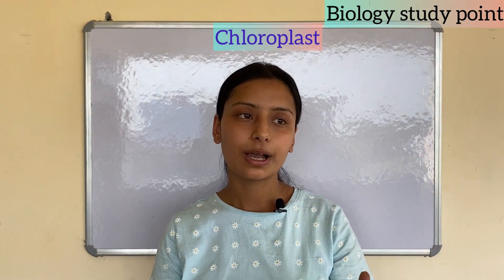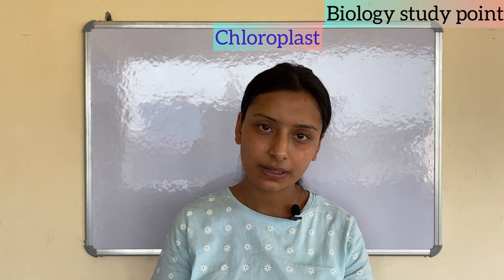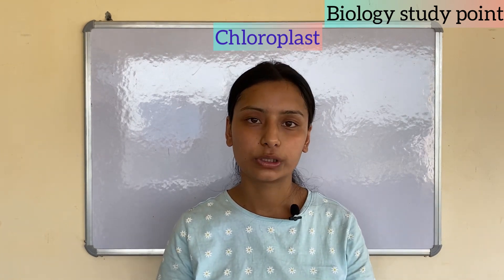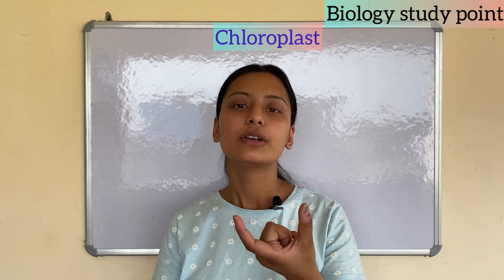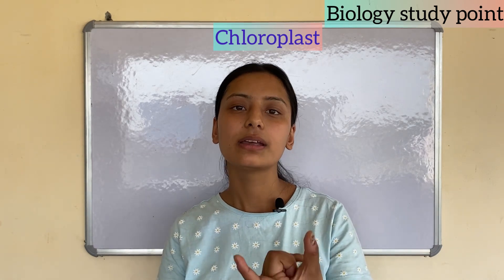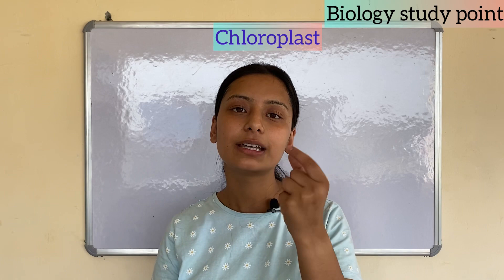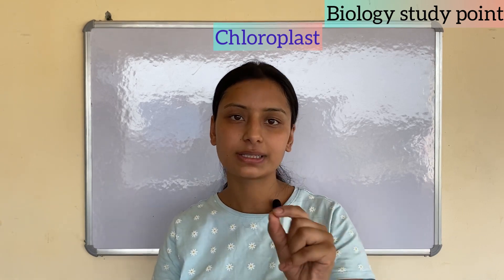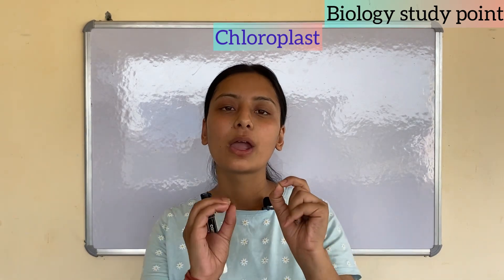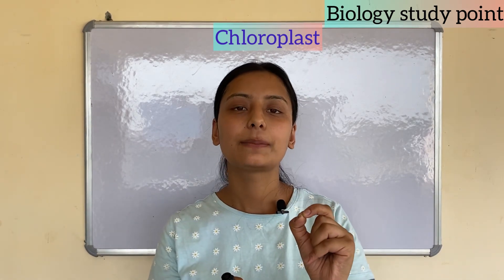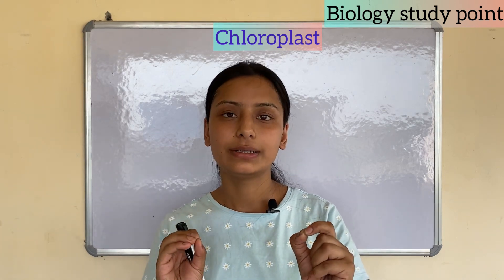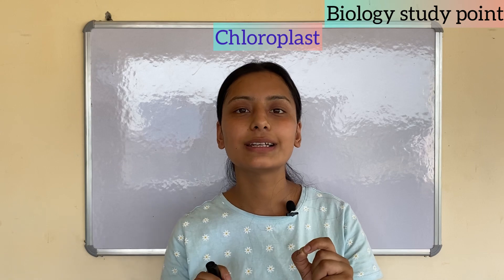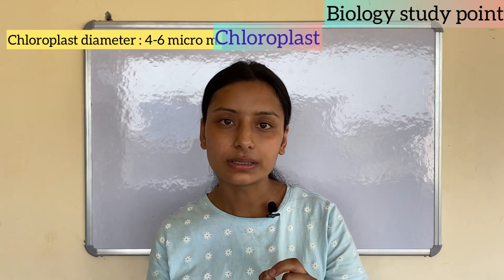Chloroplast is found in green plants — the autotrophs that make their own food. Inside the leaf, at the stomata guard cells, you can see the chloroplast. The chloroplast contains the pigment chlorophyll. The diameter of a chloroplast is 4 to 6 micrometers, and the green color of plants is due to chlorophyll.